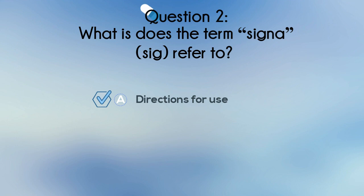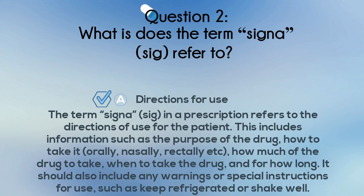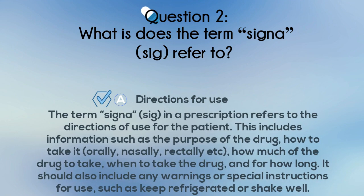The correct answer is A. The term 'signa' or 'sig' in a prescription refers to the directions of use for the patient. This includes information such as the purpose of the drug, how to take it (orally, nasally, rectally, etc.), how much of the drug to take, when to take it, and for how long. It should also include any warnings or special instructions, such as 'keep refrigerated' or 'shake well.'